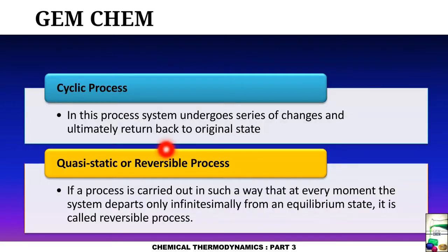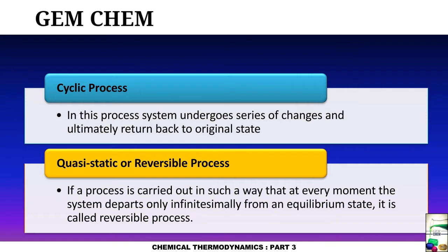A cyclic process is one in which the system undergoes a series of changes and ultimately returns to the original state. A quasi-static or reversible process refers to a process carried out such that at every moment the system departs only infinitesimally from an equilibrium state — it is called a reversible process. Reversible and irreversible processes have been dealt with in detail in the previous video.